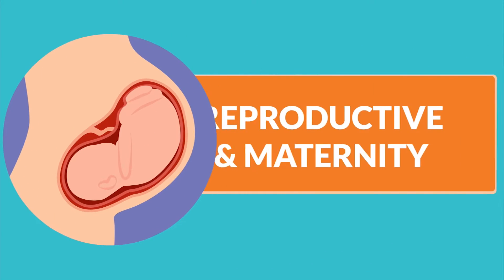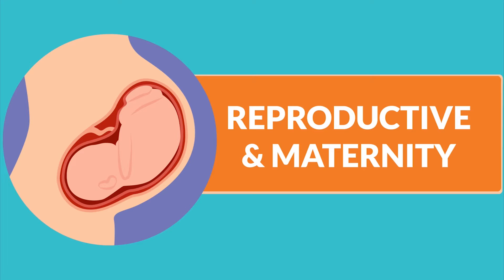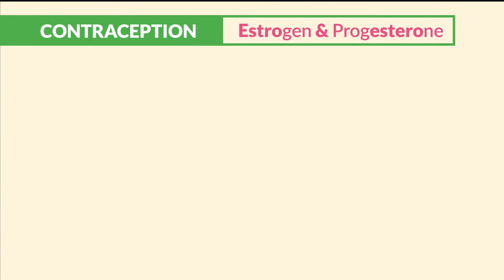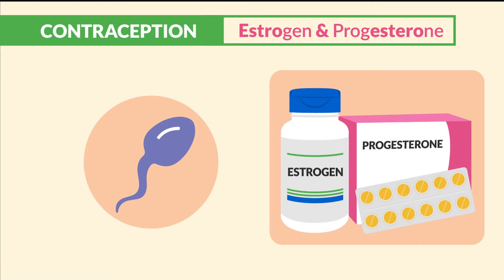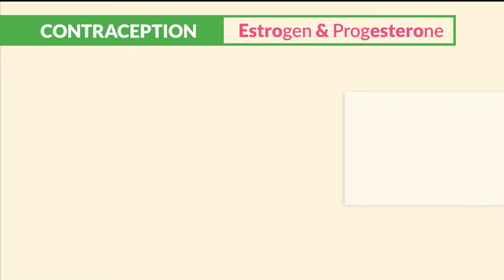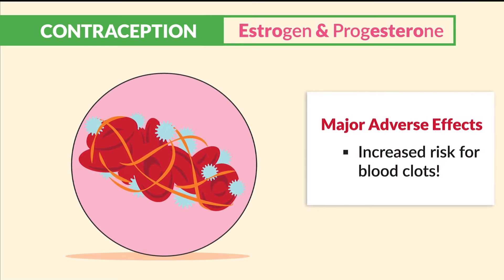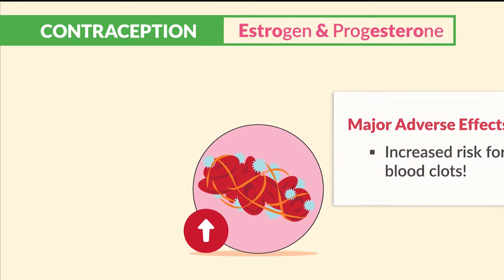Alright guys, let's begin! Now for reproductive and maternity. First up we have contraception — estrogen and progesterone — our typical oral birth controls that everyone takes to prevent pregnancy. Now the major adverse effect is increased risk for blood clots.